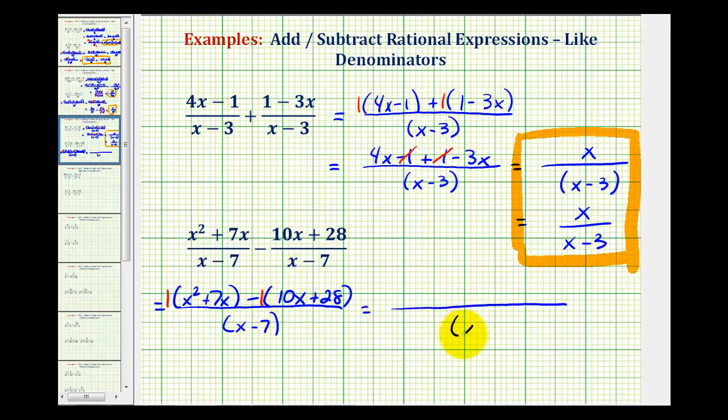Our denominator is the quantity x minus 7, and the numerator here we'll have x squared plus 7x. But because we're distributing a negative 1, we're going to have minus 10x minus 28. Notice when subtracting, the signs of these two terms changed.